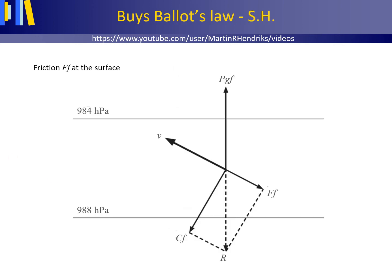Of course, when you're in the Southern Hemisphere, the Coriolis effect causes a deflection of the air movement to the left. Then, when you stand with your back to the wind, low air pressure is in front of you on your right, and high pressure is behind you on your left.